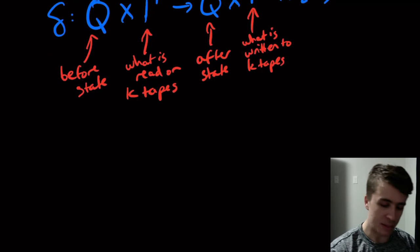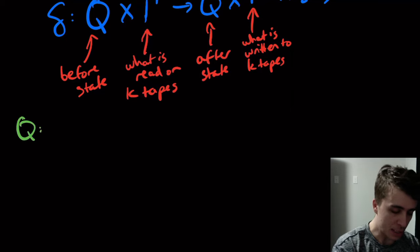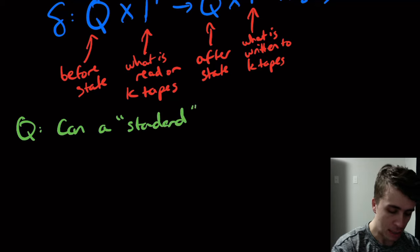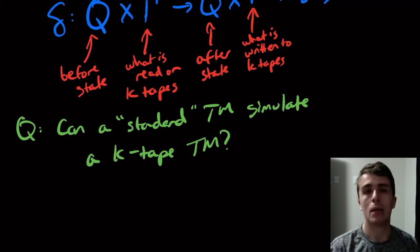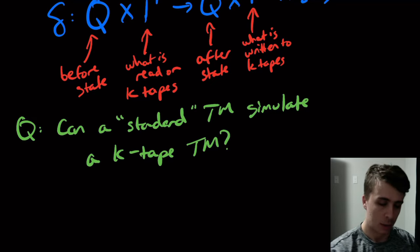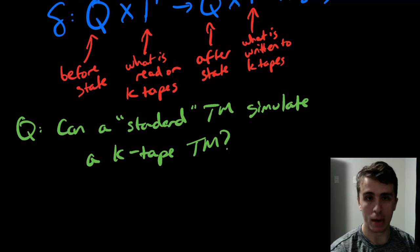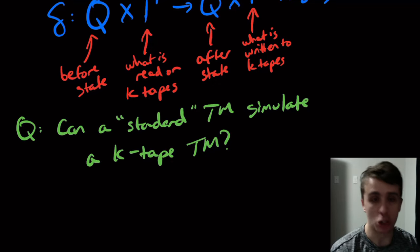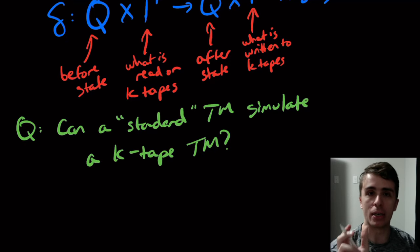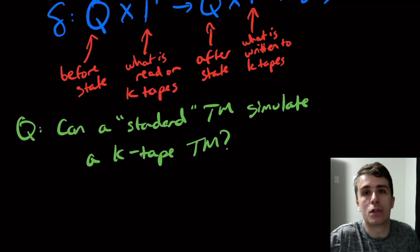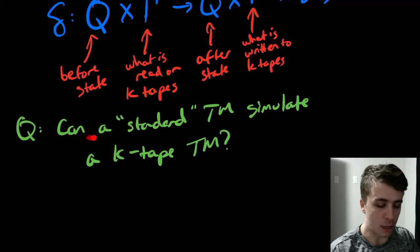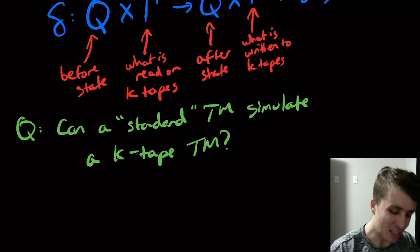To show this is equivalent to the standard model, we need to answer: can a standard Turing machine simulate a K-tape Turing machine? The other direction — can a K-tape machine simulate a standard one — is clear, because the K-tape machine can just use one tape and ignore all the other K minus one tapes, using only the top tape for whatever the original machine would have done. So that's not really that interesting. The more interesting question is: can a single tape simulate many tapes? It turns out the answer is yes.